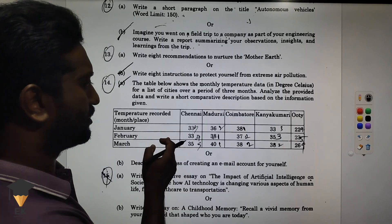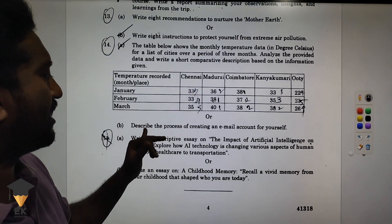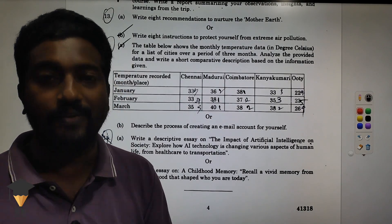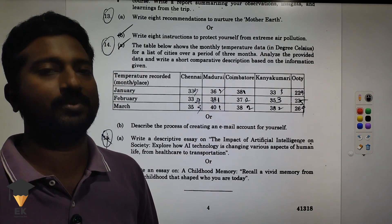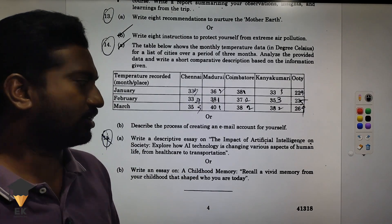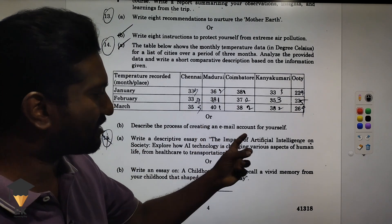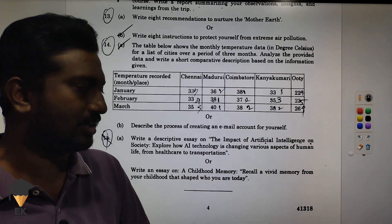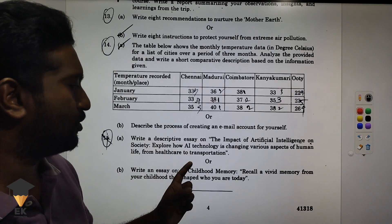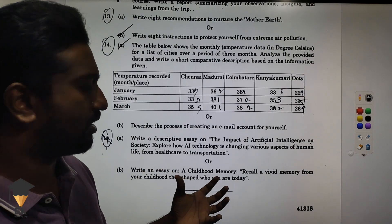January, February, March — compare the passage. Describe the process of creating an email about yourself. Final question: write a descriptive essay on the impact of artificial intelligence on society. Also, write an essay on a childhood memory — recall a memory from your childhood that shaped who you are today.